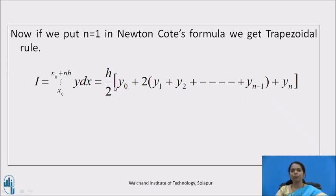To summarize this formula, you can recall it as first term and last term are single. You can write them together and plus 2 times rest of the terms.